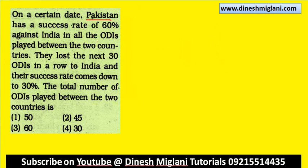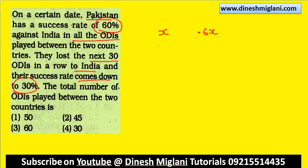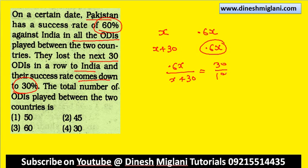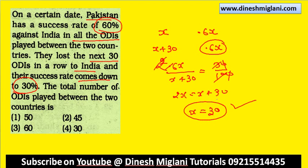On a certain date Pakistan had a success rate of 60% against India in all ODI series. They lost the next 30 ODIs in a row and their success rate came down to 30%. What is the total number of ODI matches played? Suppose X matches were played — success was 0.6X. After 30 more losses: 0.6X divided by (X + 30) = 30 by 100. Solving: 2X = X + 30, so X = 30. Total matches = 30 + 30 = 60 — third one is the answer.